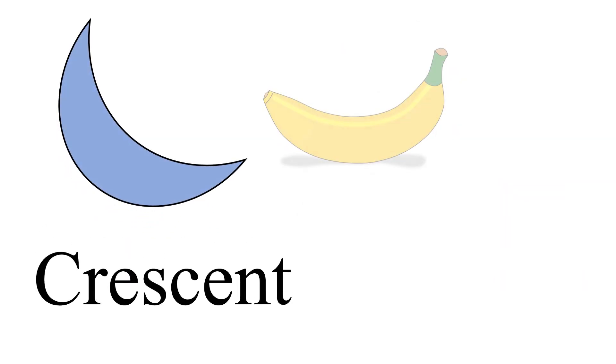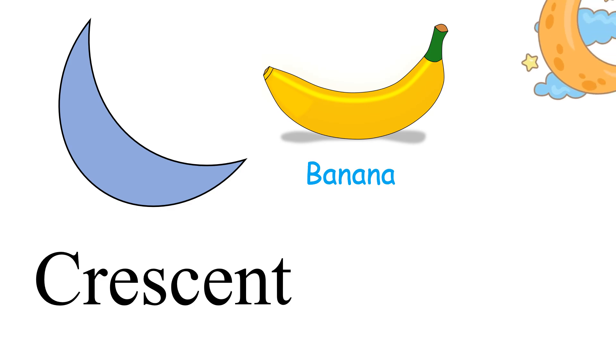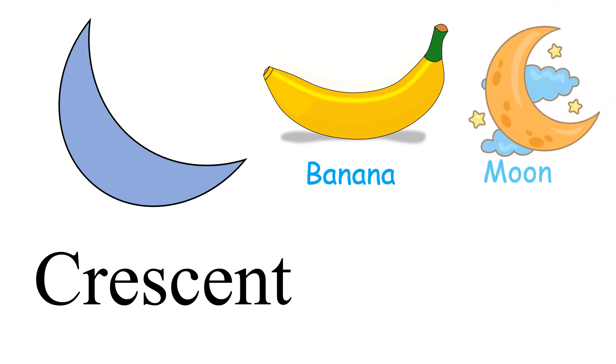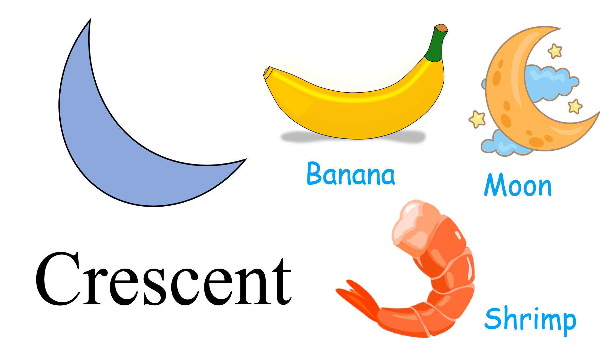Crescent. Banana. Moon. Shrimp. These objects are crescent in shape.